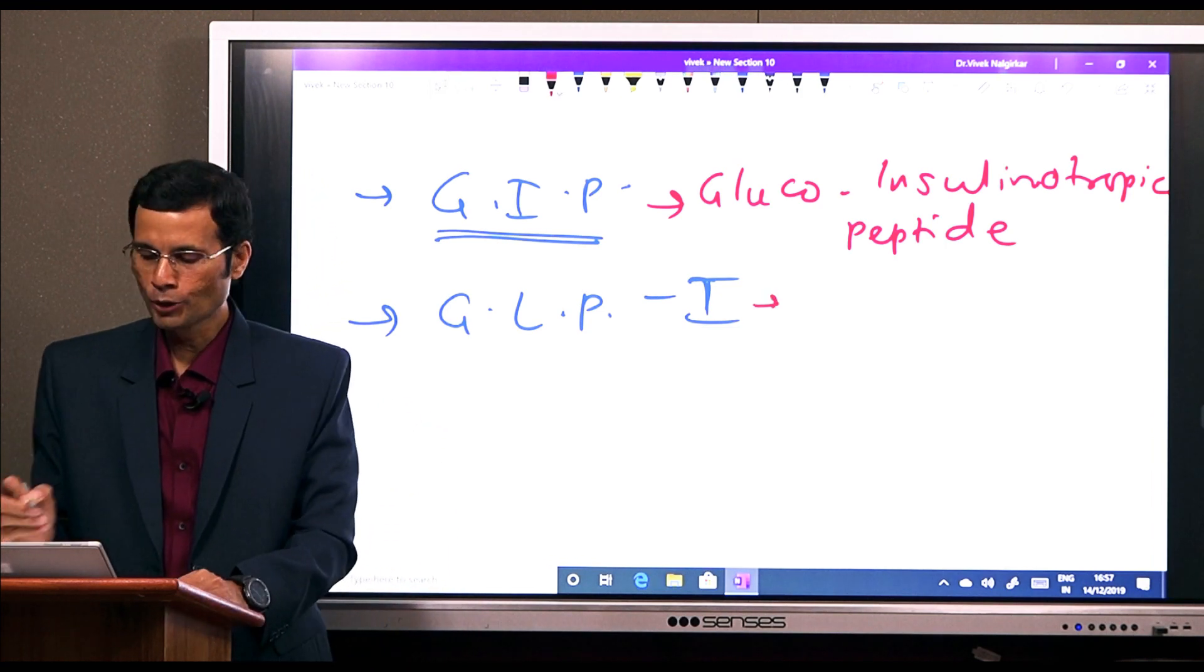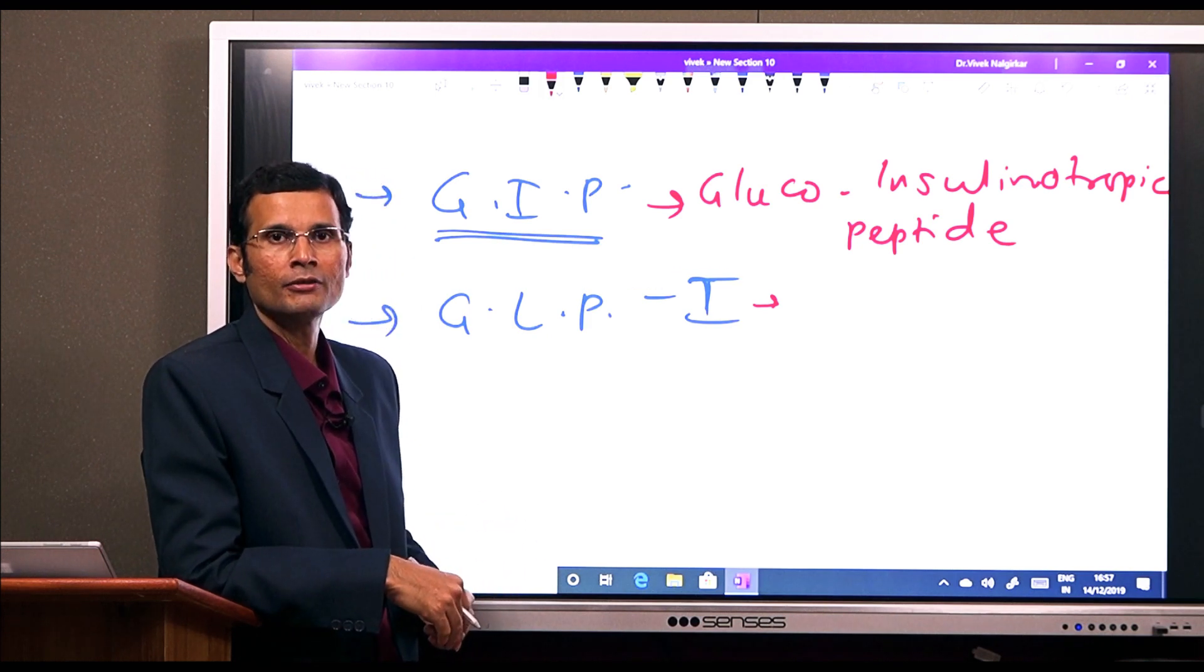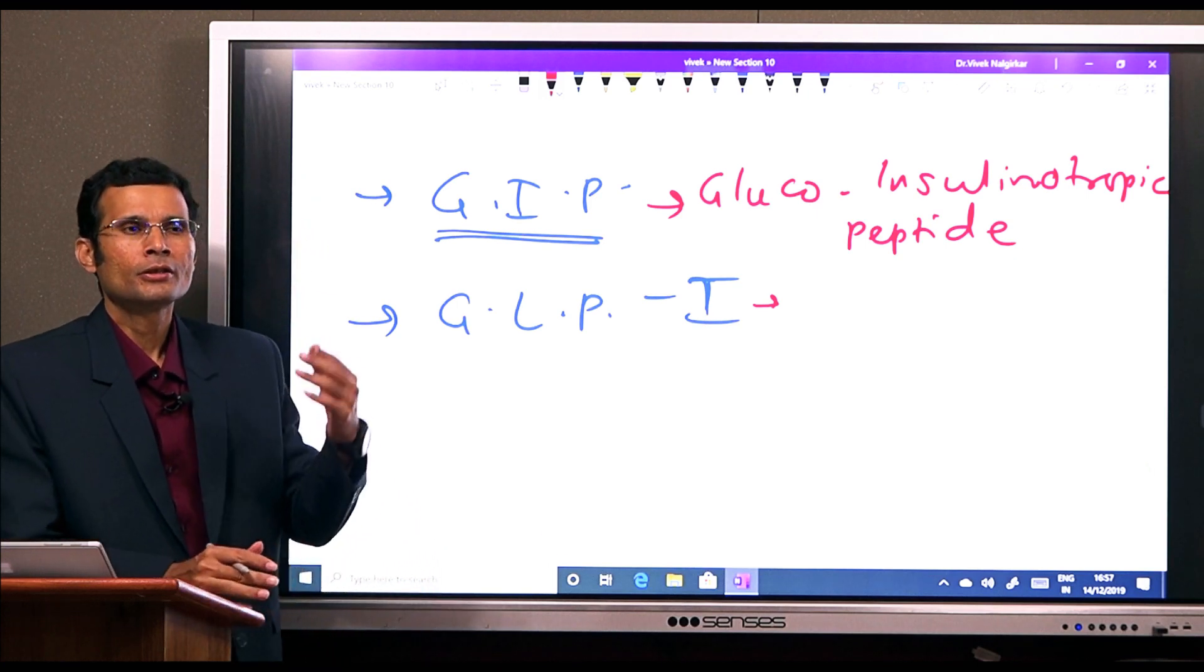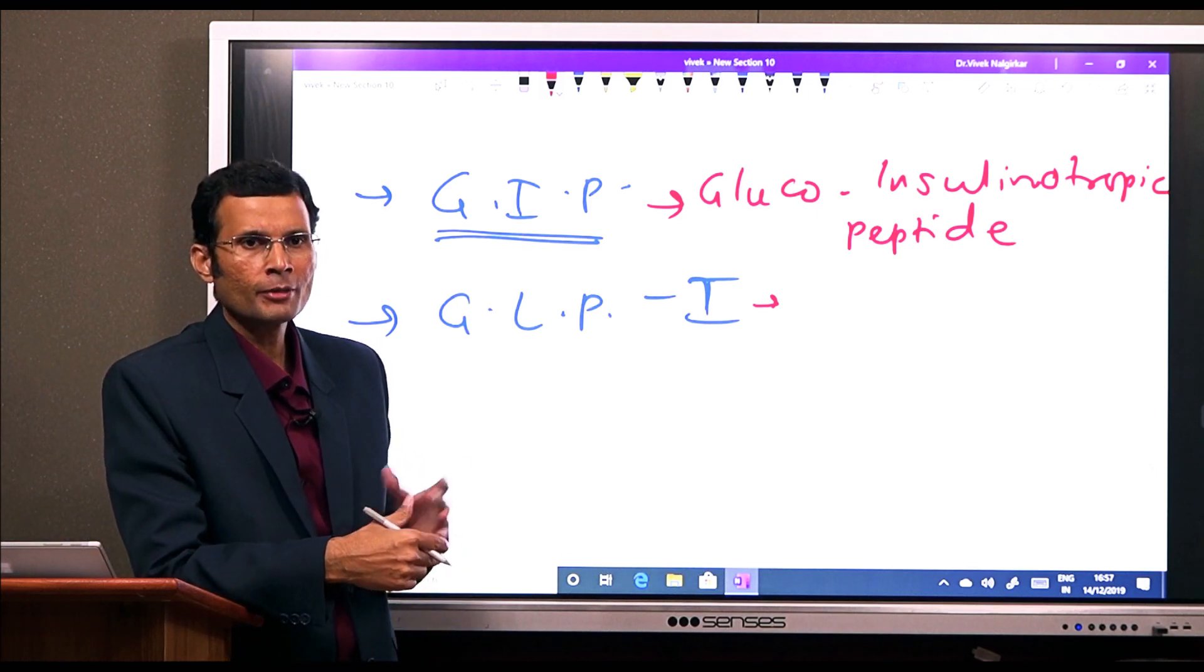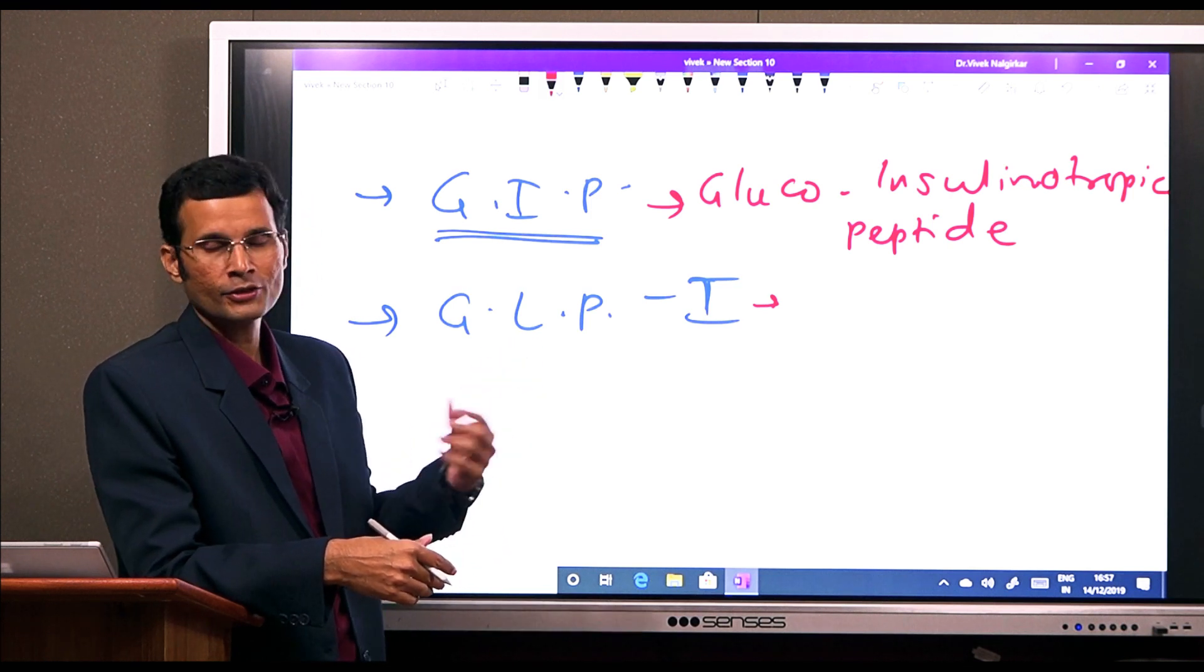The other one is glucagon-like peptide. That is another known established incretin. And there are efforts to develop drugs that are insulinotropic based on this known effect.